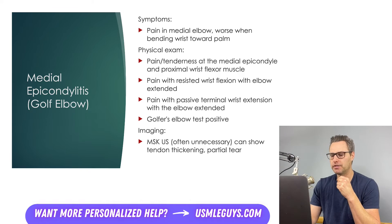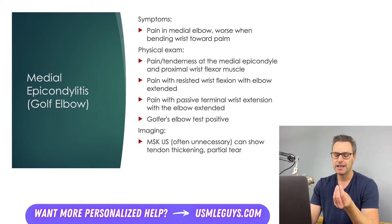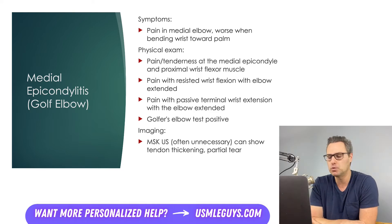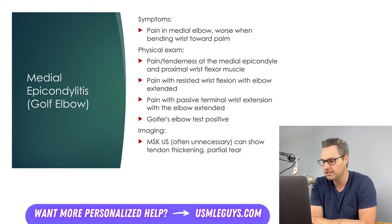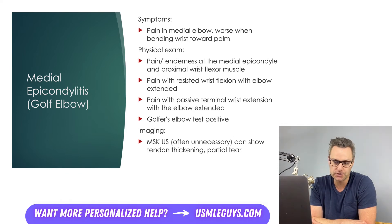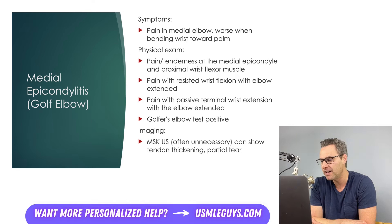The special maneuver to test for golfer's elbow is called the golfer's elbow test. The physician stabilizes the patient's extended elbow in one hand, placing their thumb on the medial epicondyle, while the patient forms a fist and supinates the forearm, then deviates and flexes the wrist to the ulnar side while the physician provides resistance by grabbing the patient's enclosed fist. This test is positive if it elicits pain at the medial epicondyle.